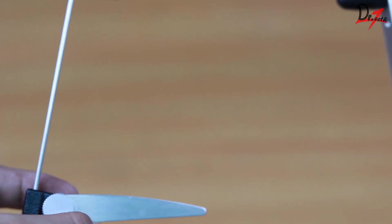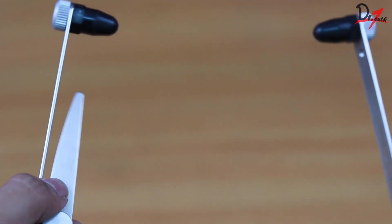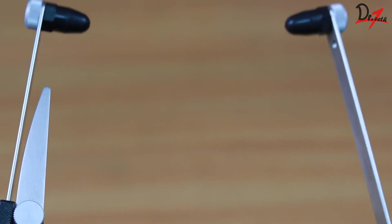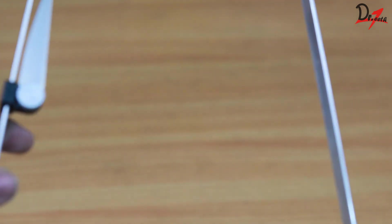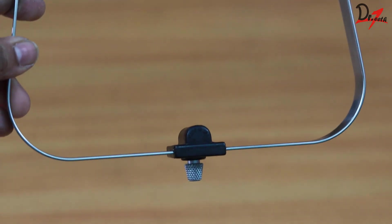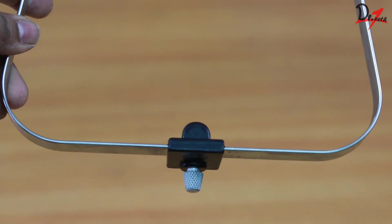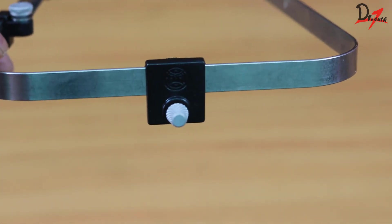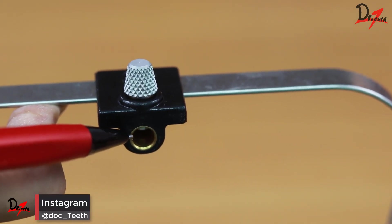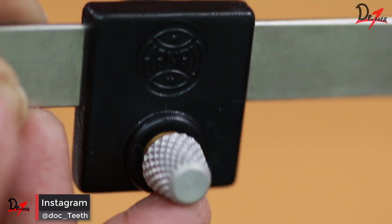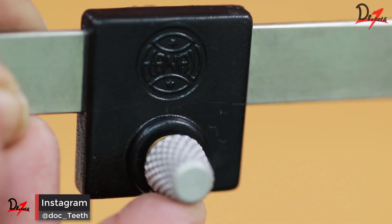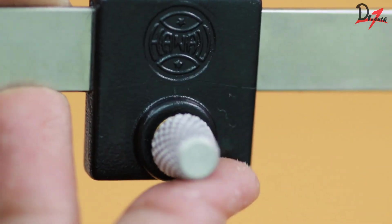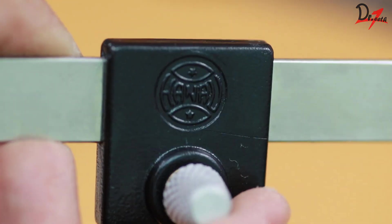Here we can also see we have an orbital pointer, which is used to mark the infraorbital notch of the patient. We have to first palpate the infraorbital notch of the patient and align this orbital pointer to that. In the front, we have a slot for attaching the locking device and a screw here, which helps us secure the locking device.